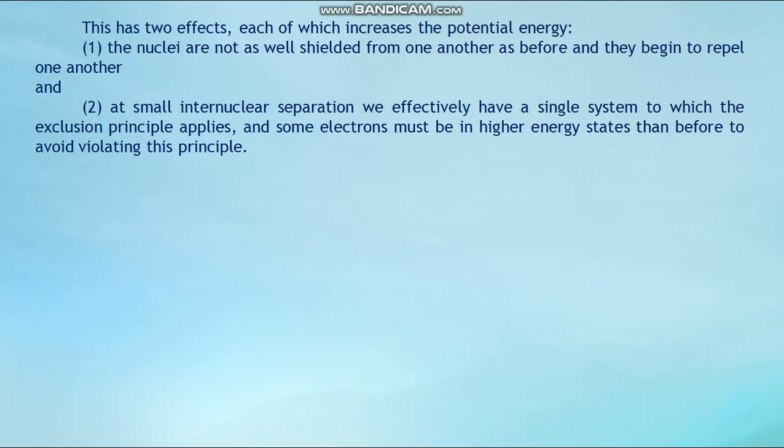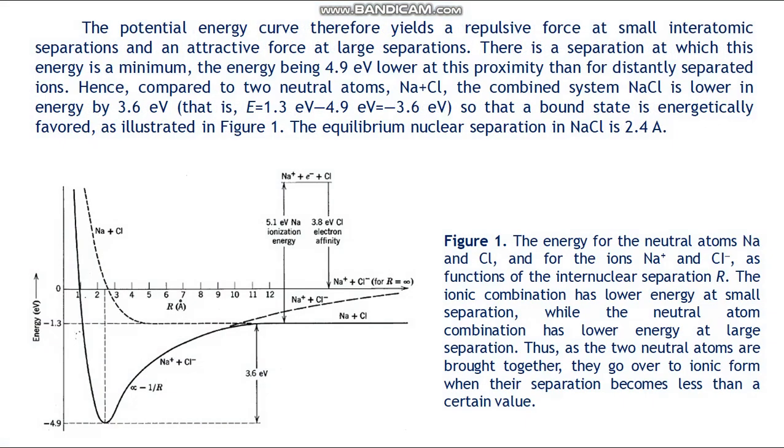This overlap has two effects, each of which increases the potential energy. First, the nuclei are not as well shielded from one another as before and they begin to repel one another. Second, at small internuclear separation we effectively have a single system to which the exclusion principle applies, and some electrons must be in higher energy states to avoid violating this principle. The potential energy curve therefore yields a repulsive force at small interatomic separations and an attractive force at large separations.